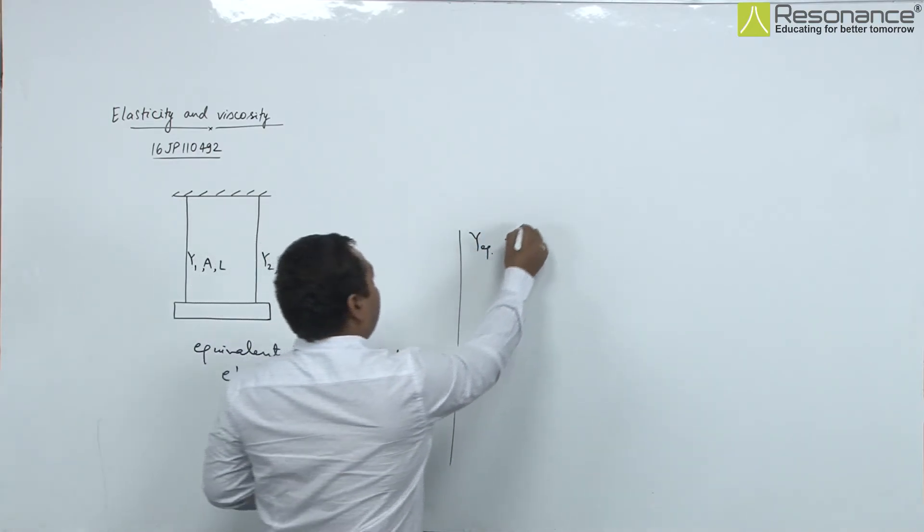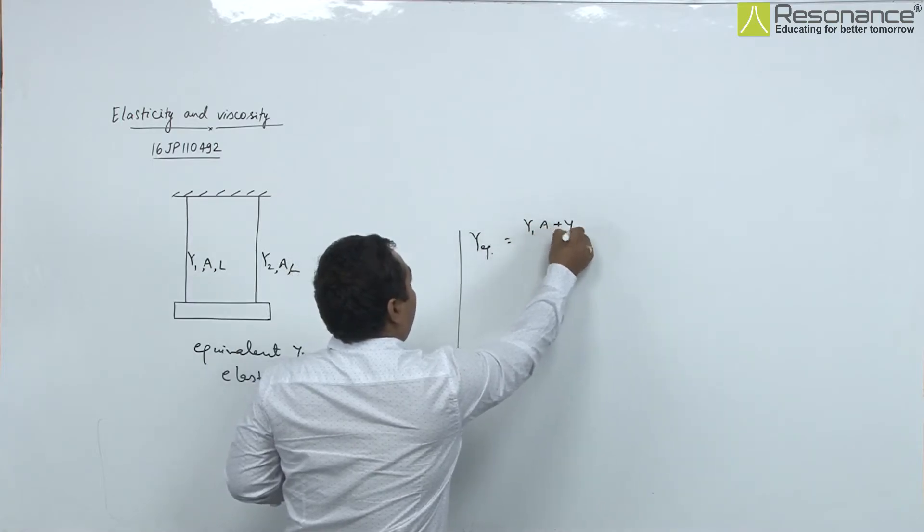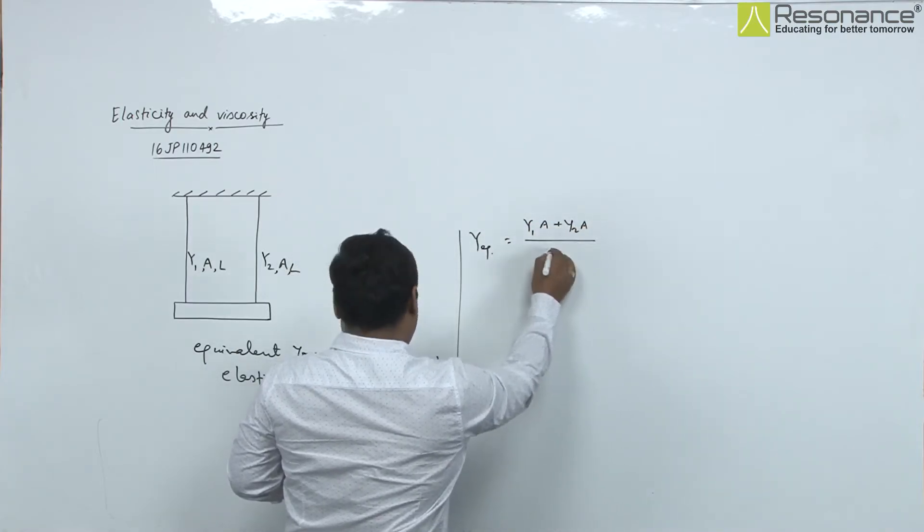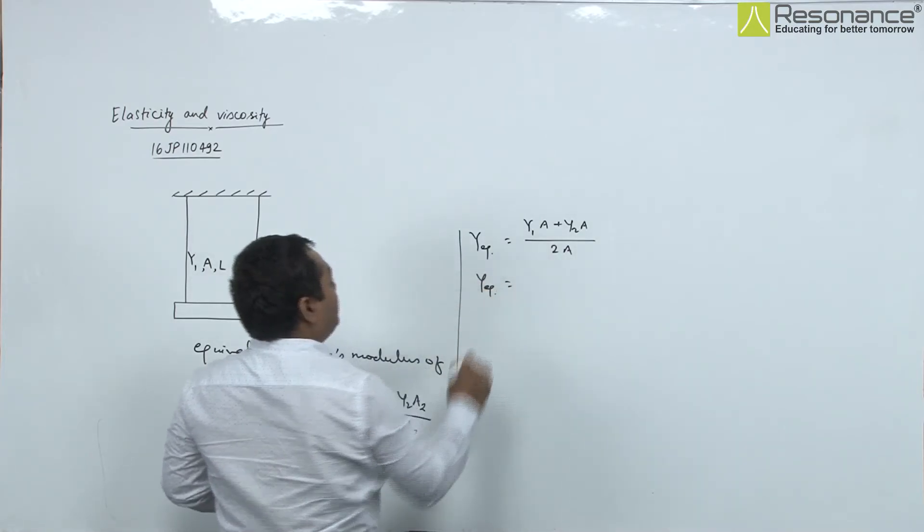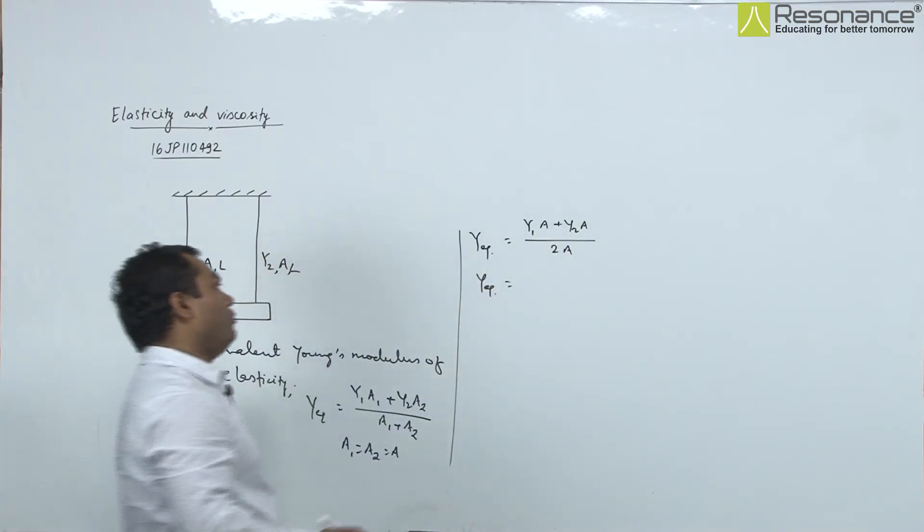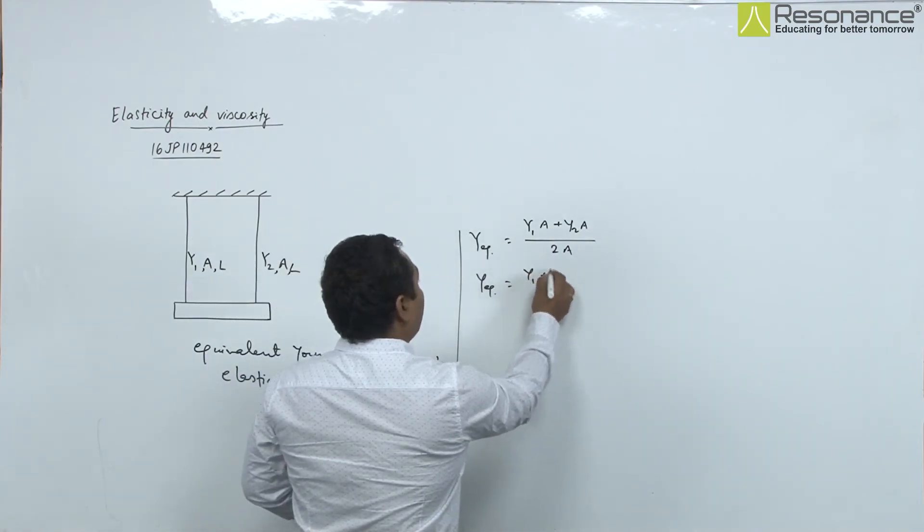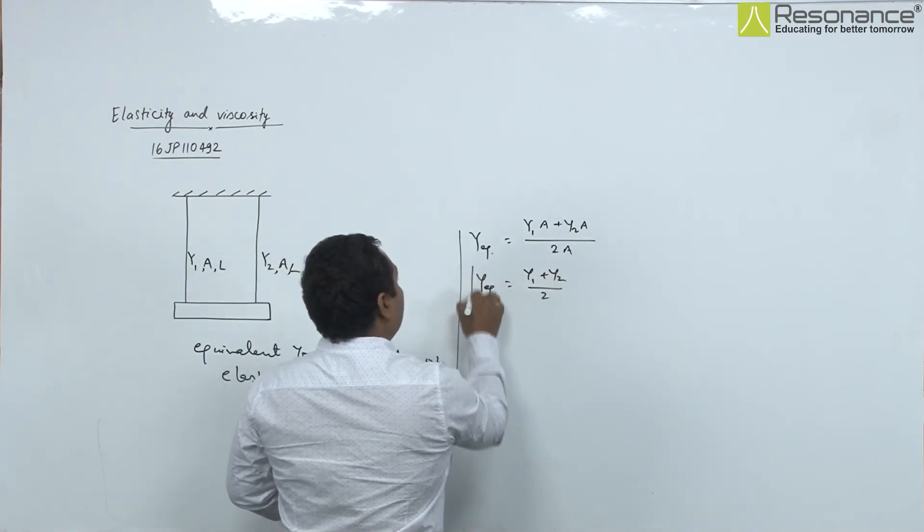y_equivalent will be y1·a plus y2·a upon 2a. By solving, we get y_equivalent as y1 plus y2 upon 2.